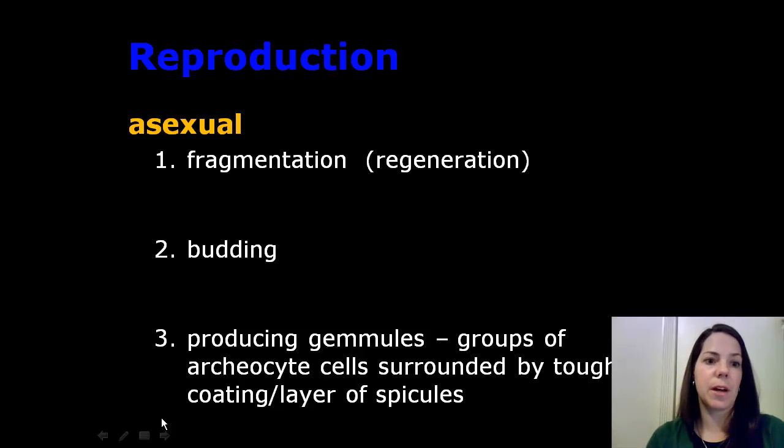let's move on to reproduction. Sponges use asexual reproduction and sexual reproduction methods. Let's begin by discussing the asexual reproduction methods of the sponge that create an offspring that is genetically identical to the parent sponge. There are three methods.